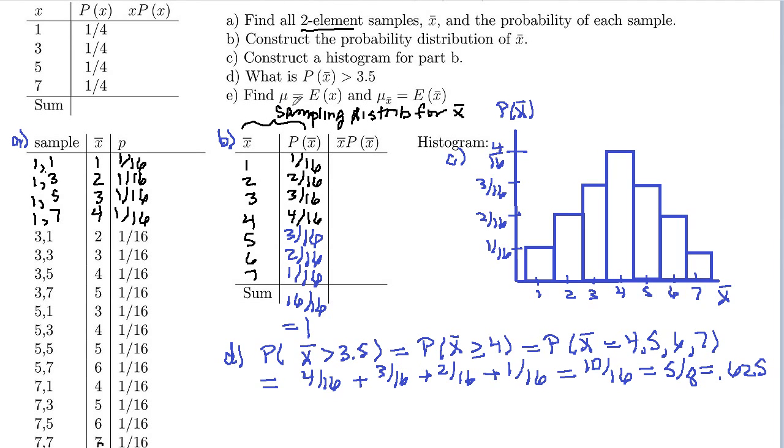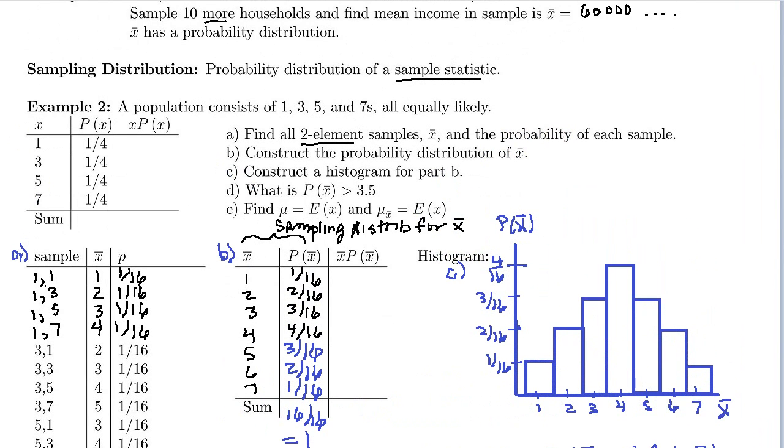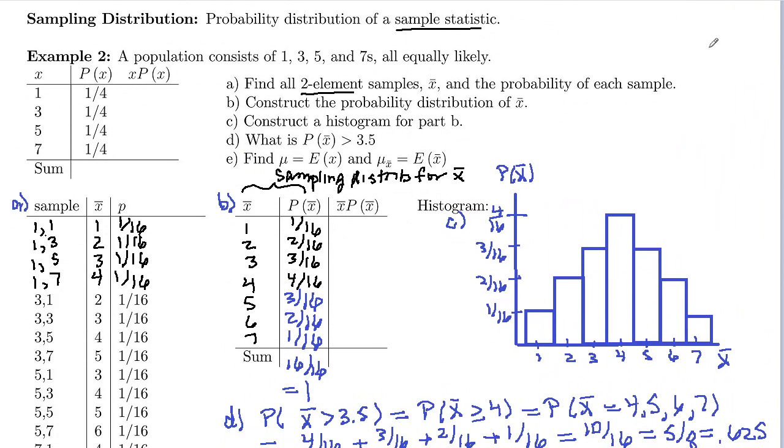And then part E, find the expected value of X, the mean of the original distribution. So you can do that up here. So here is our original distribution. We've got 1s, 3s, 5s, and 7s. Those are X values, not X bar values. And they're all equally likely, so they've got probability 1/4th. You want to find the mean of that distribution. You multiply all the way across, and then sum. So it's the sum of X times probability. 1 times 1/4th, 1/4th.